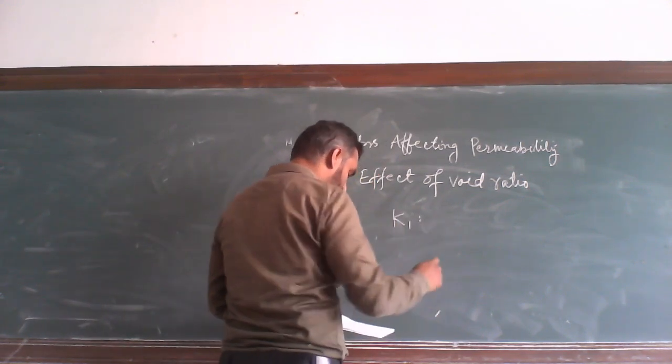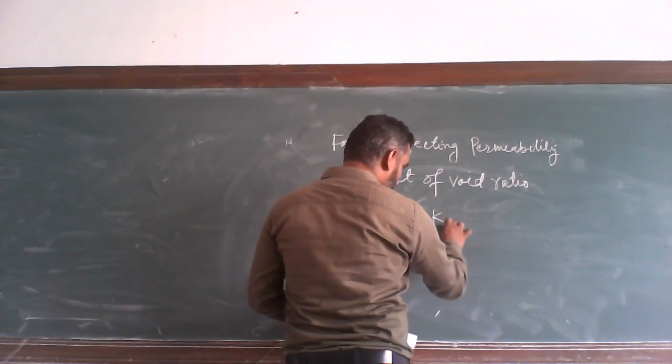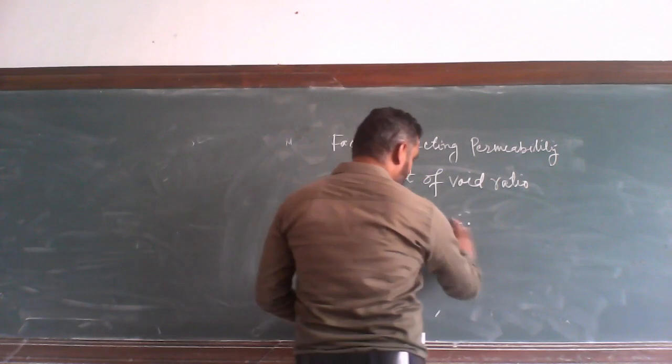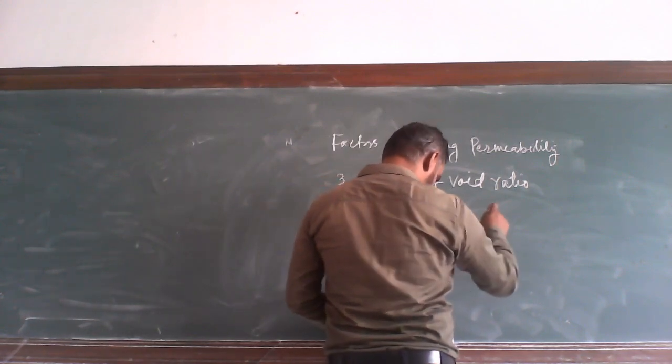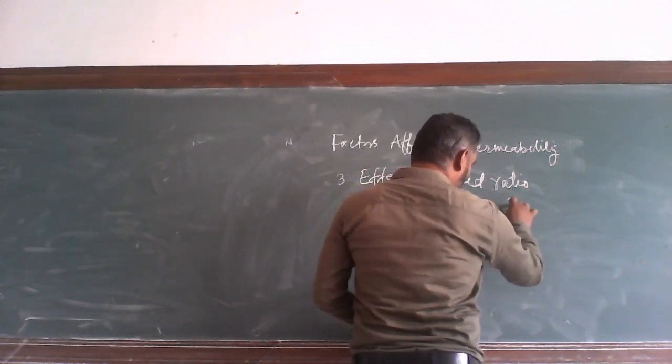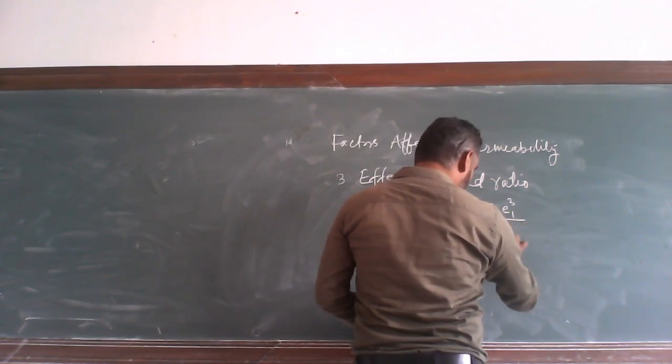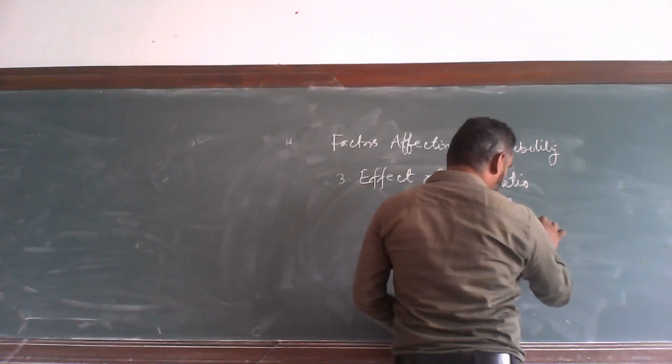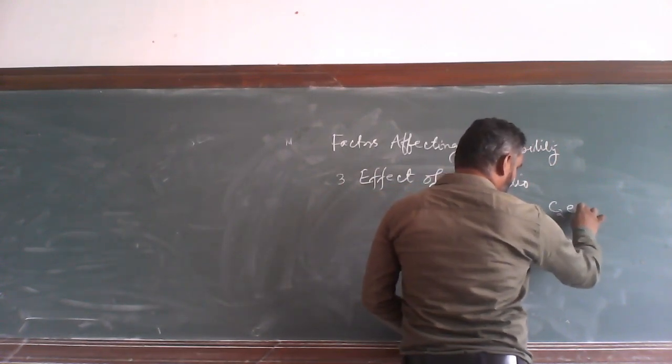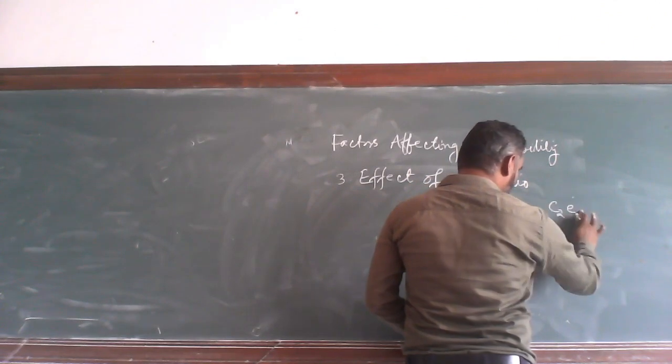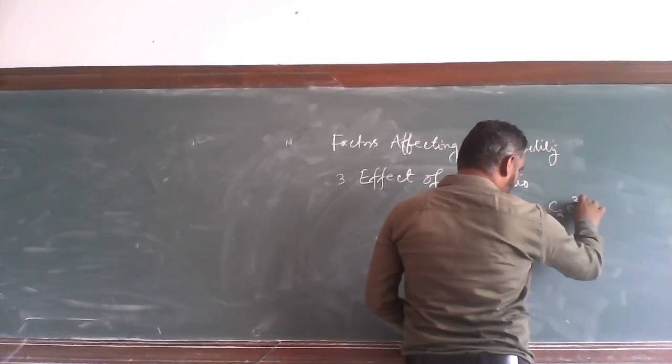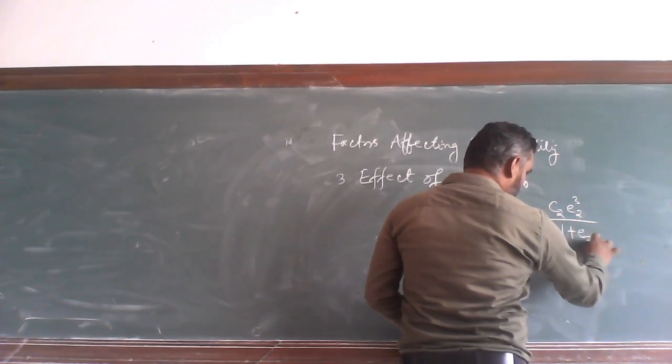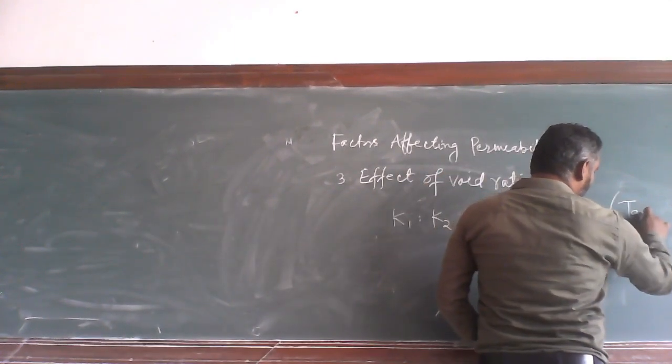K1 is proportional to K2. Is equal to... Yes, it is equal to C1 e1 cubed divided by 1 plus e1. C2 e2 cubed divided by 1 plus e1. This is the Kozeny's Equation.